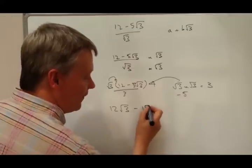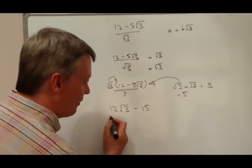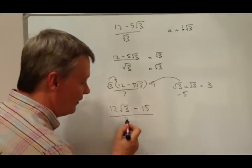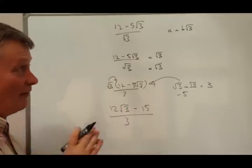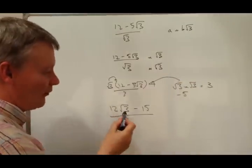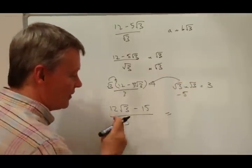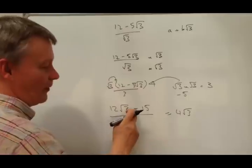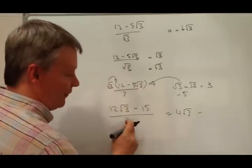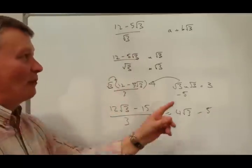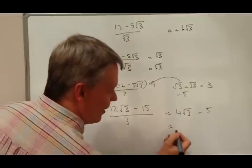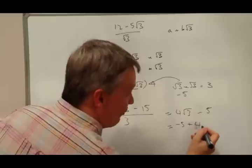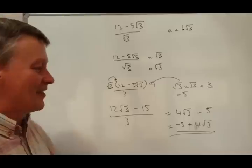That's really cool, very pleased about that. And the way they do these questions, they will work out for you to divide that by 3. So I'm very close now to answering the question. 12 root 3 divided by 3 is 4, so it's going to be 4 root 3. And then I've got minus 15 divided by 3, which is 5. So if I want to put it in that format, it's going to be minus 5 plus 4 root 3. That's the answer to my question.